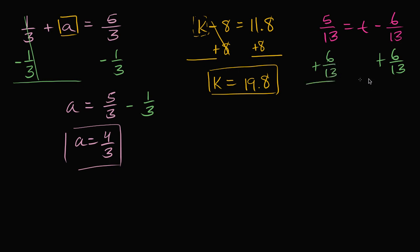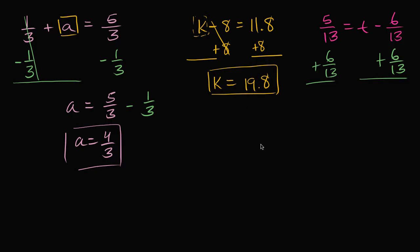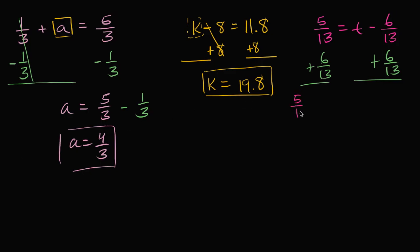So what happens? On the left-hand side, I have 5 thirteenths plus 6 thirteenths are equal to - well I was subtracting 6 thirteenths, now I add 6 thirteenths. Well those are just going to add to zero. 6 thirteenths minus 6 thirteenths is just zero, so you're left with t. So t is equal to this. If I have 5 thirteenths, then I add to that 6 thirteenths, well I'm going to have 11 thirteenths.